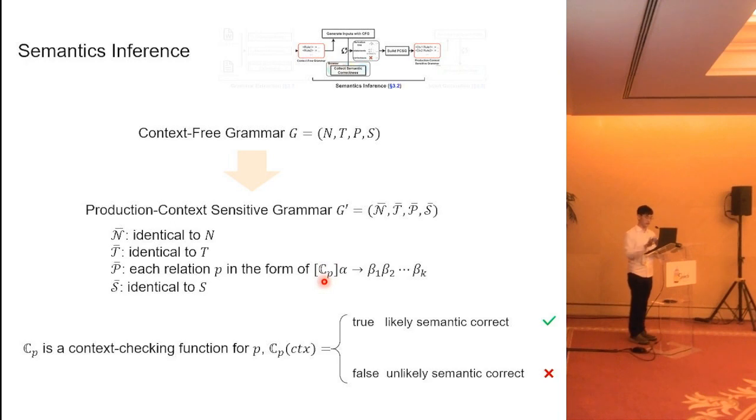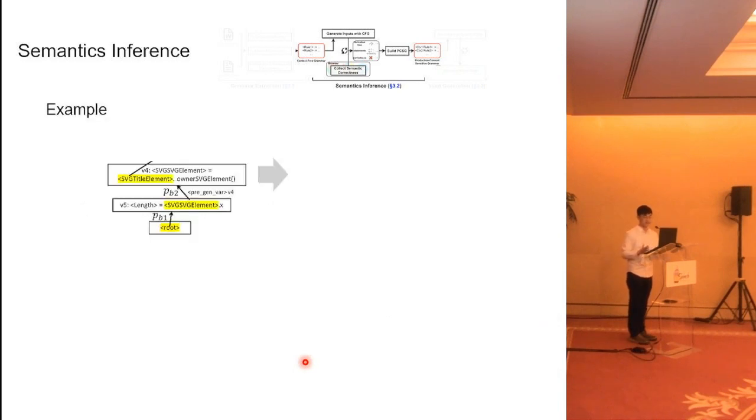This context-checking function aims to check if selecting this production rule P under a certain context is likely to produce a semantically correct test case or a semantically incorrect test case. Let's consider this example for better understanding. Suppose we are generating a test case, and we have selected production rules Pb1 and Pb2. Now we want to expand the remaining non-terminal symbols.